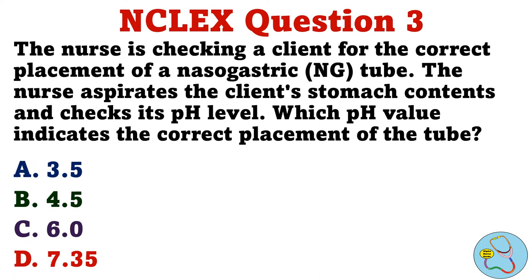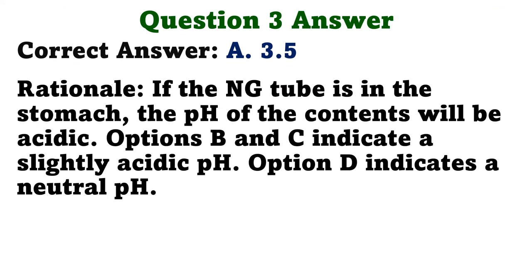Question 3. The nurse is checking a client for the correct placement of a nasogastric tube. The nurse aspirates the client's stomach contents and checks its pH level. Which pH value indicates the correct placement of the tube? A. 3.5, B. 4.5, C. 6.0, D. 7.35. The correct answer is A, 3.5. If the NG tube is in the stomach, the pH of the contents will be acidic. Options B and C indicate a slightly acidic pH. Option D indicates a neutral pH.